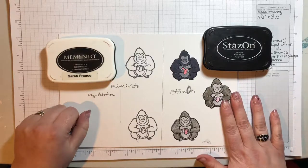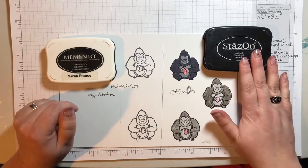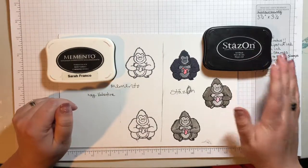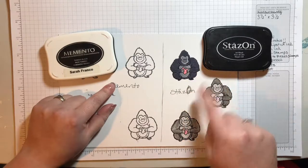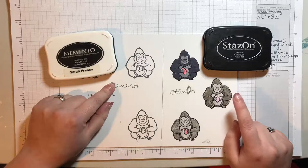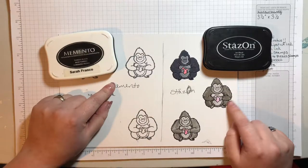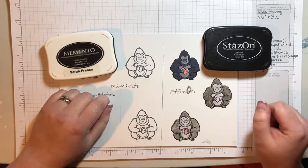So with the Stazon ink, you can't color with blends or alcohol markers because Stazon ink is alcohol based. So I colored it with the watercolor pencils and then the watercolor pencils and the blender pens. And then on this side over here, I colored it with the Stampin' Write markers.